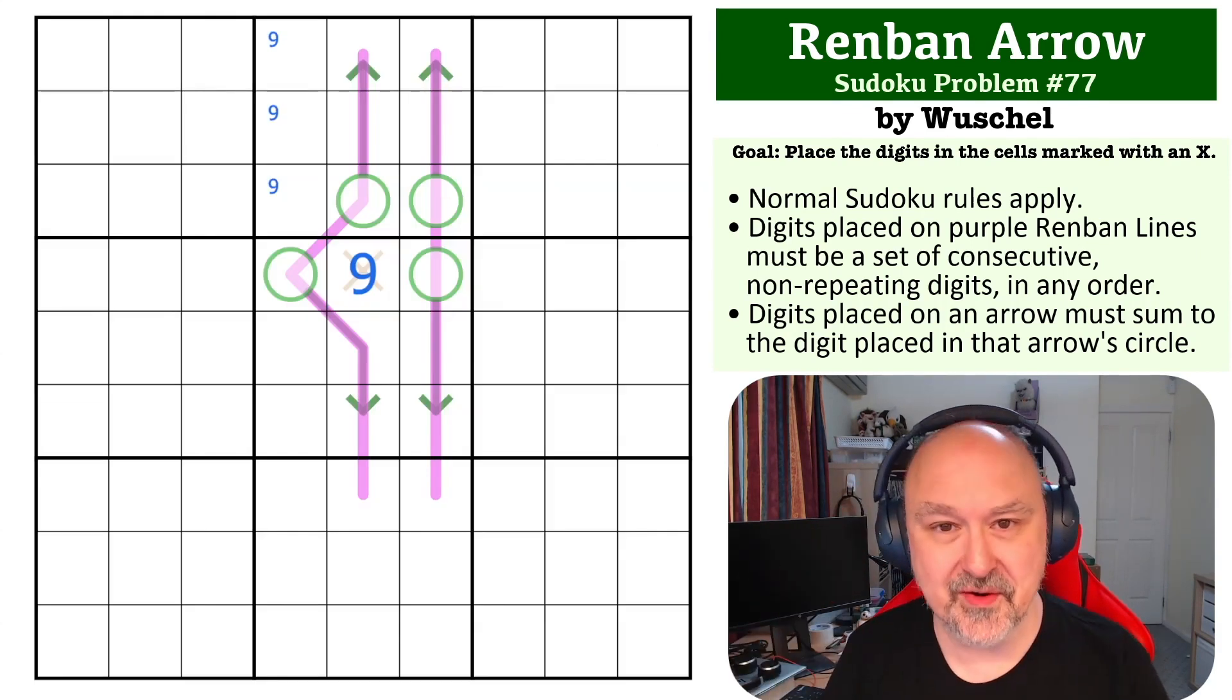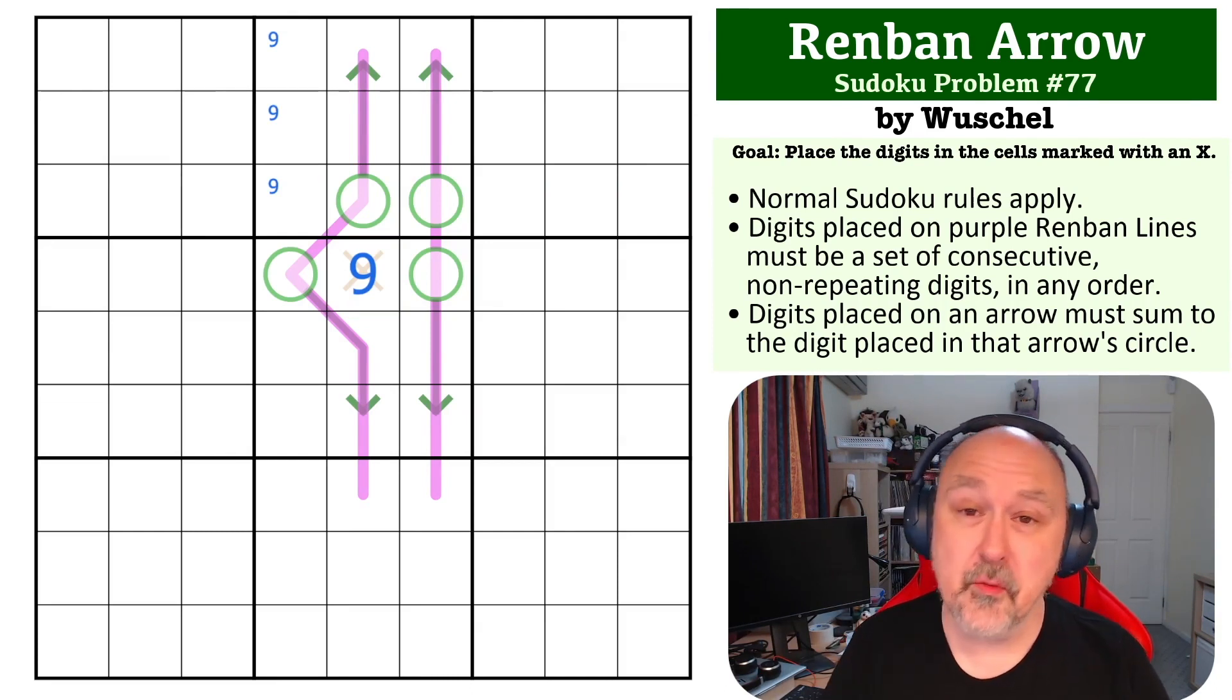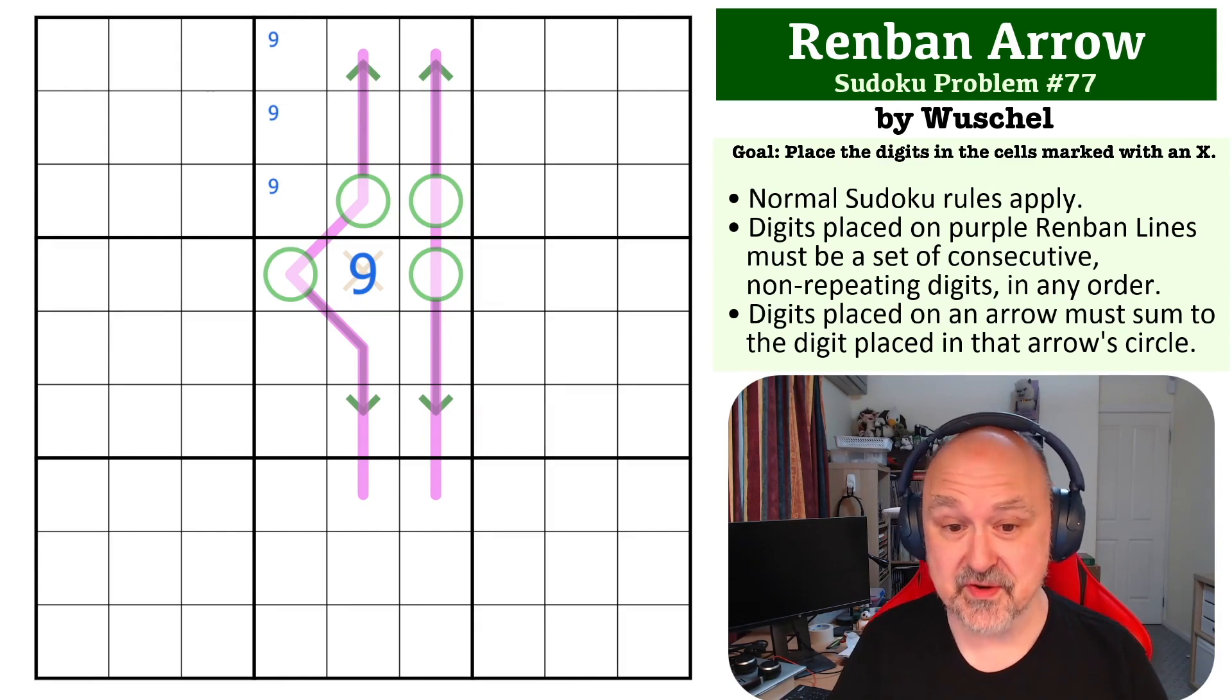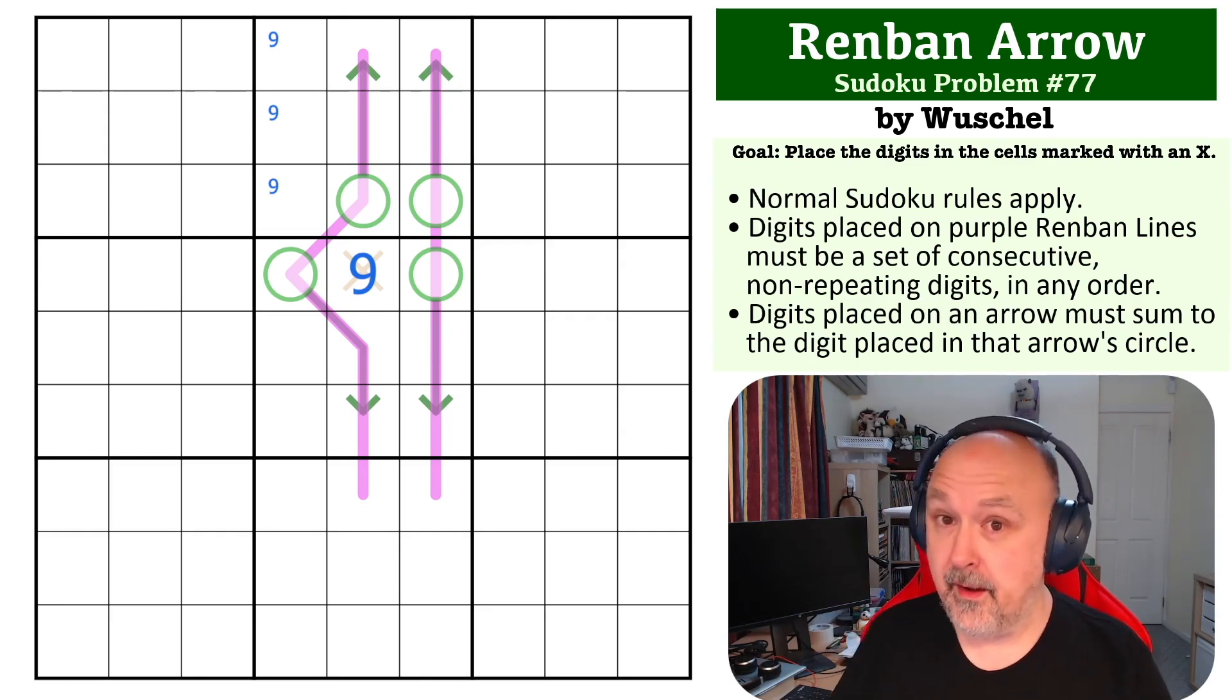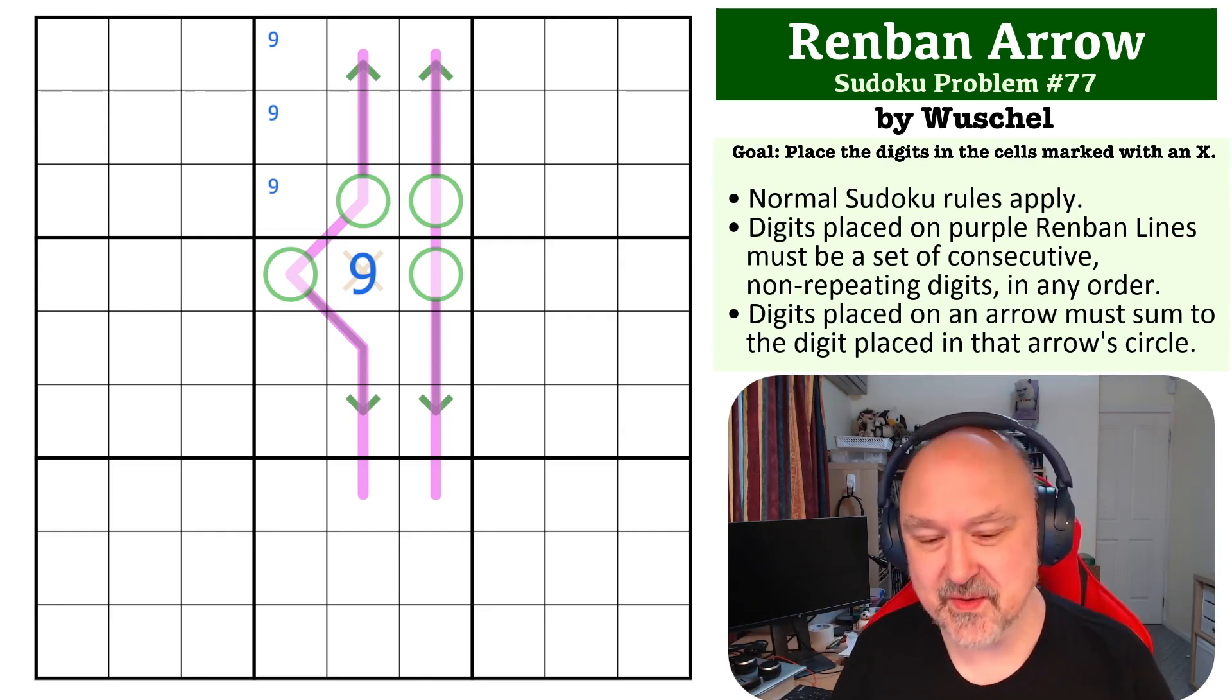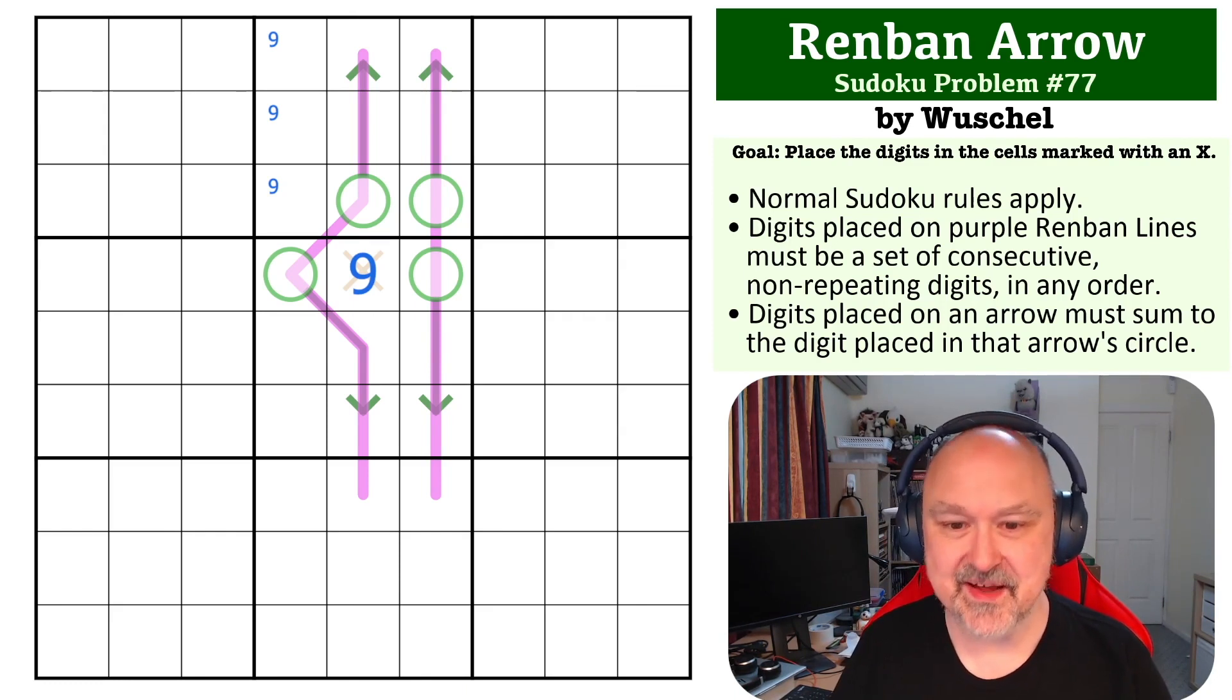And it took a while for me to see this one, and several of the testers reported the same thing. Very interesting interaction between the renban and the arrows. And I think some people may turn around and say they saw it instantly, others may come back and go 'huh.' So we'll see what the comments on this one are like. I really like this problem - it definitely made me think, and that's the whole point of the series. Hope you're enjoying the series, hope you enjoyed this one in particular. Thank you Wuchel for submitting it, and as always, good luck with your solving.